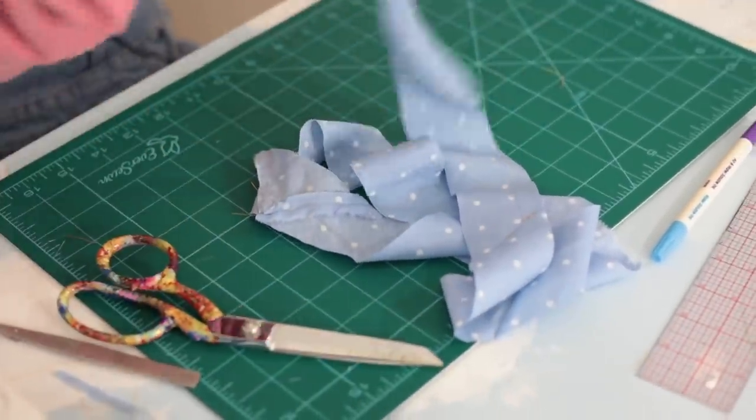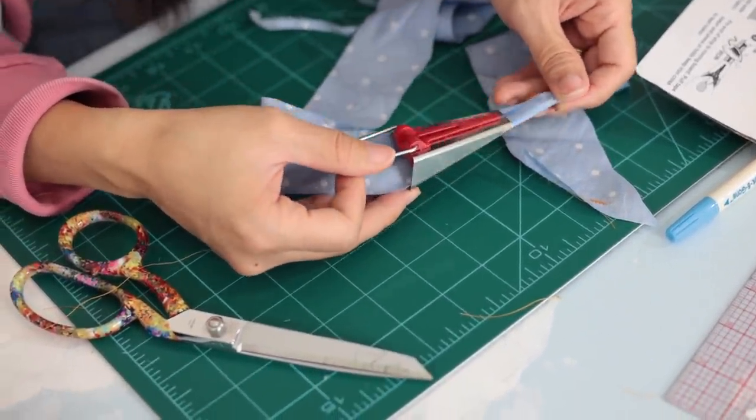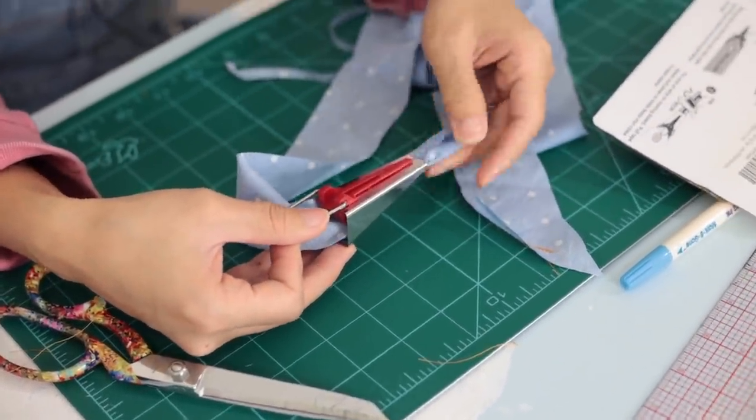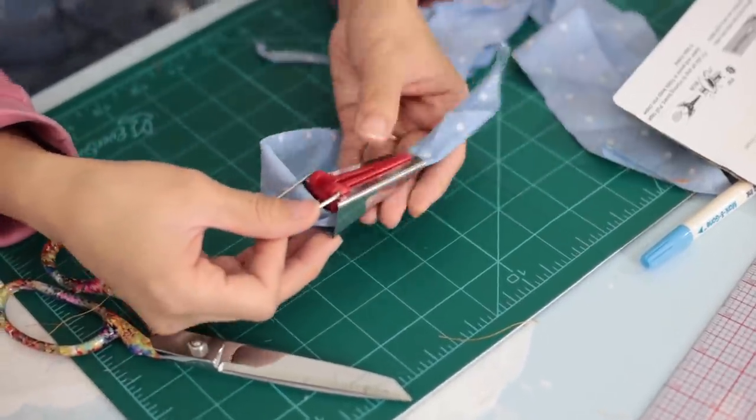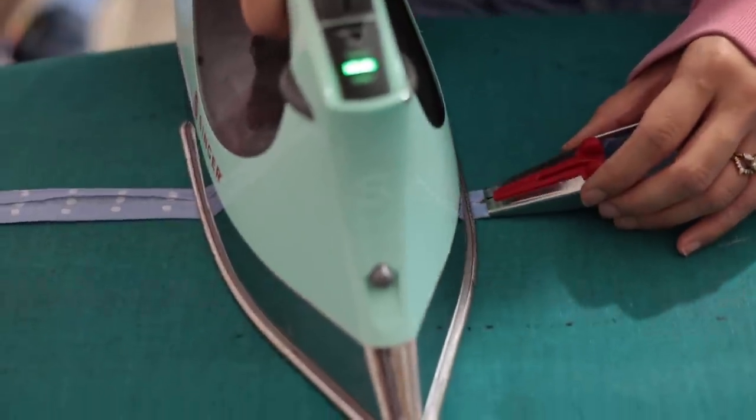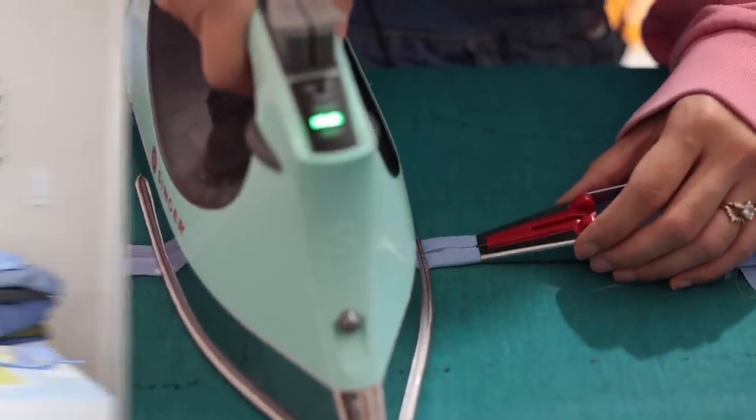I also wanted to share this handy bias tape maker, which will evenly fold your fabric so you can quickly press it with your iron. The pack I have comes in different sizes so you can make different size bias tape, and I'll link it in my description box for anyone interested in getting one.